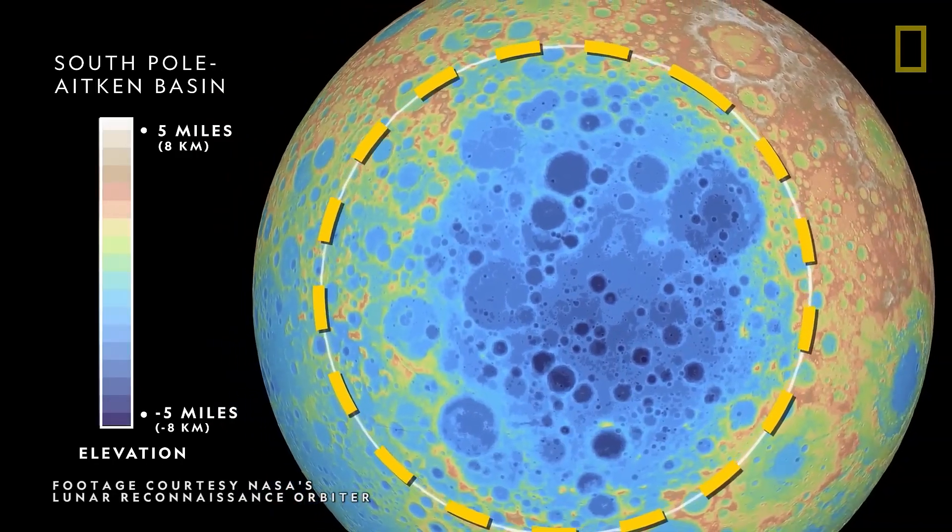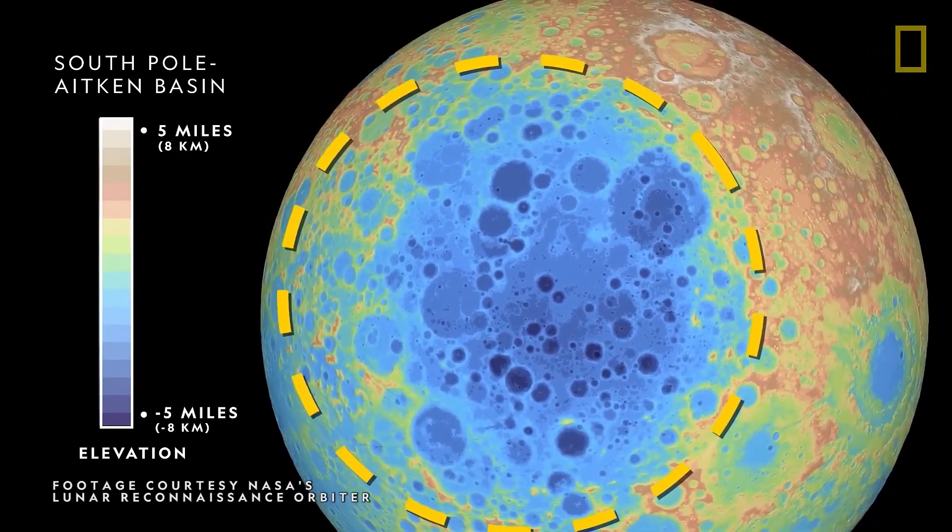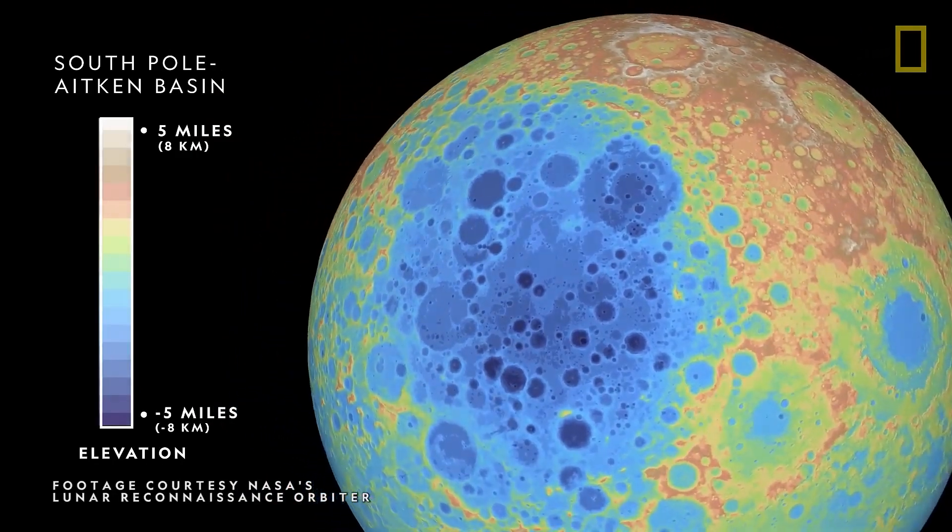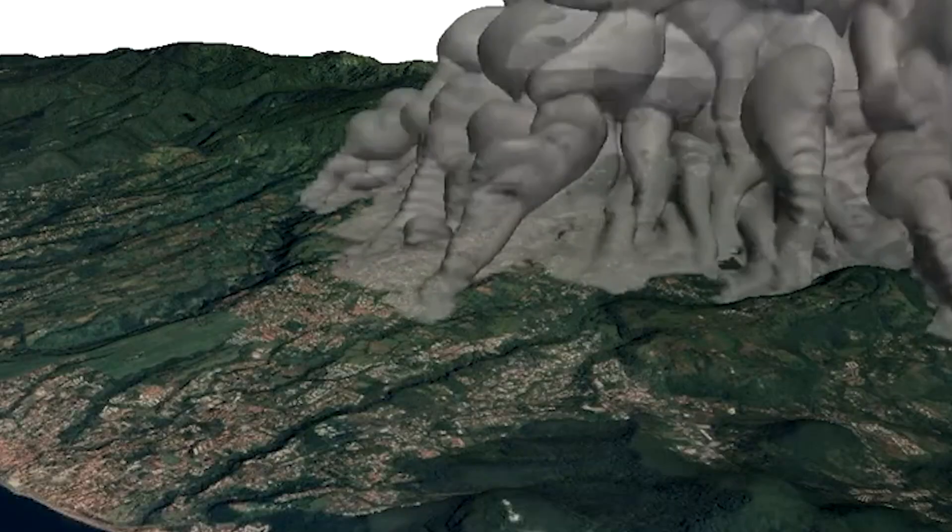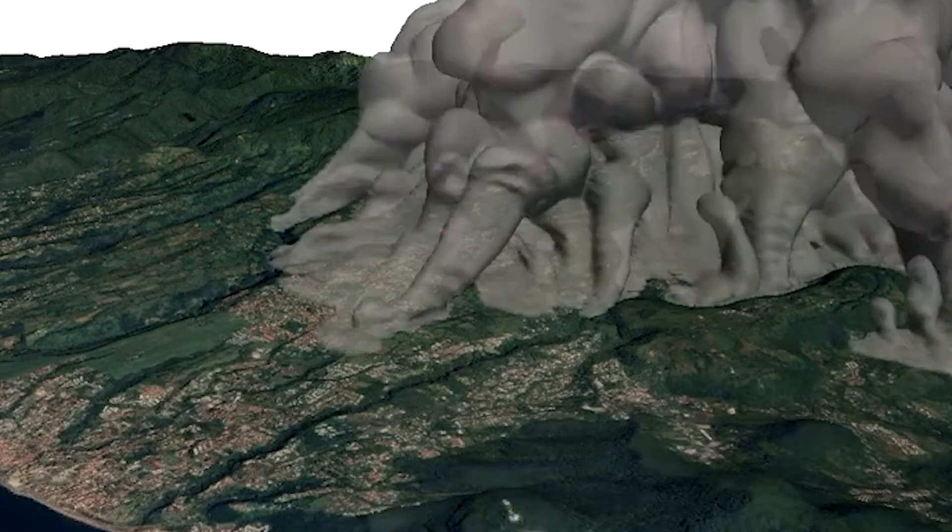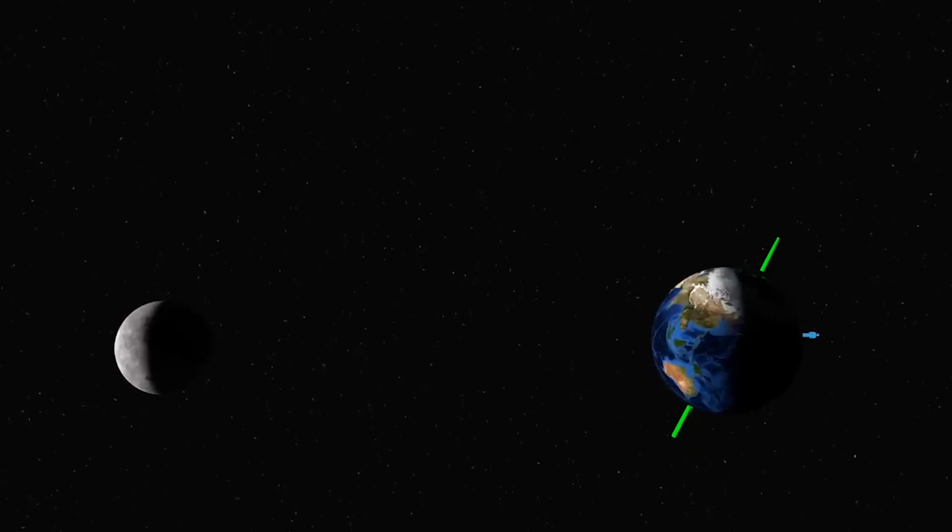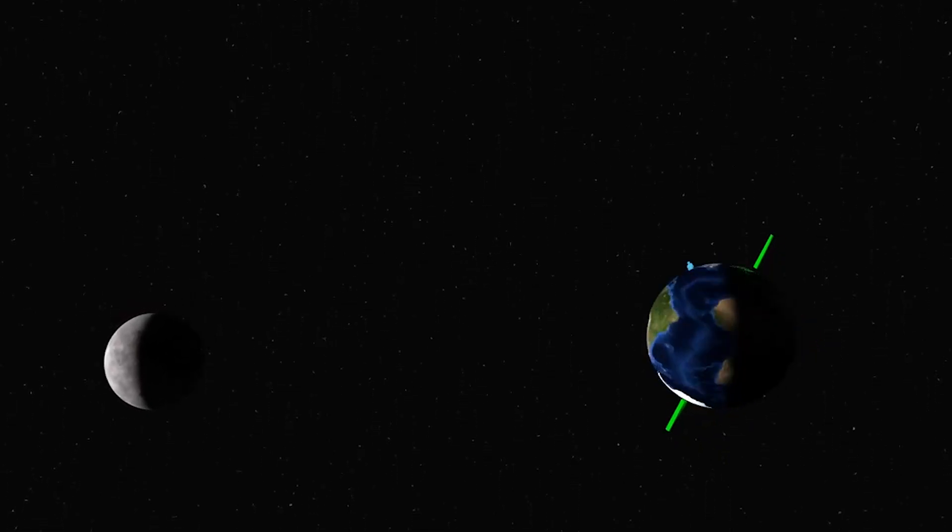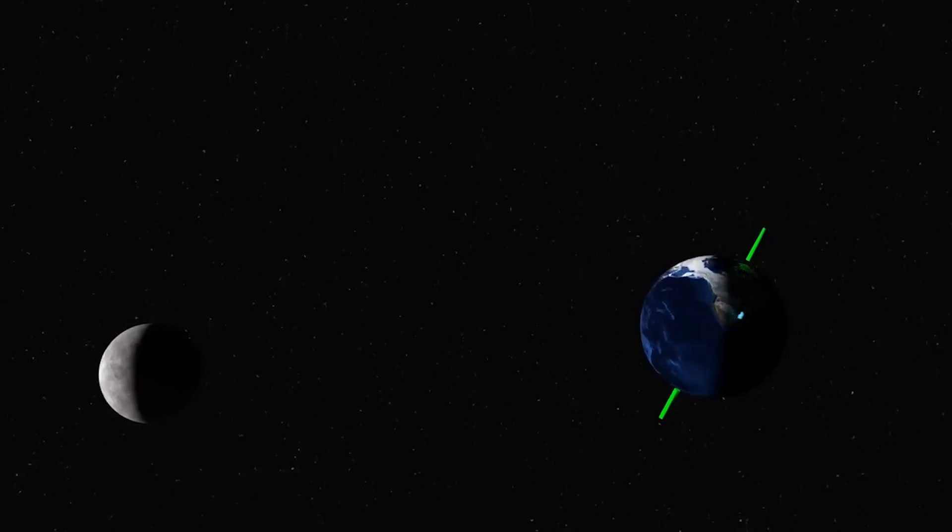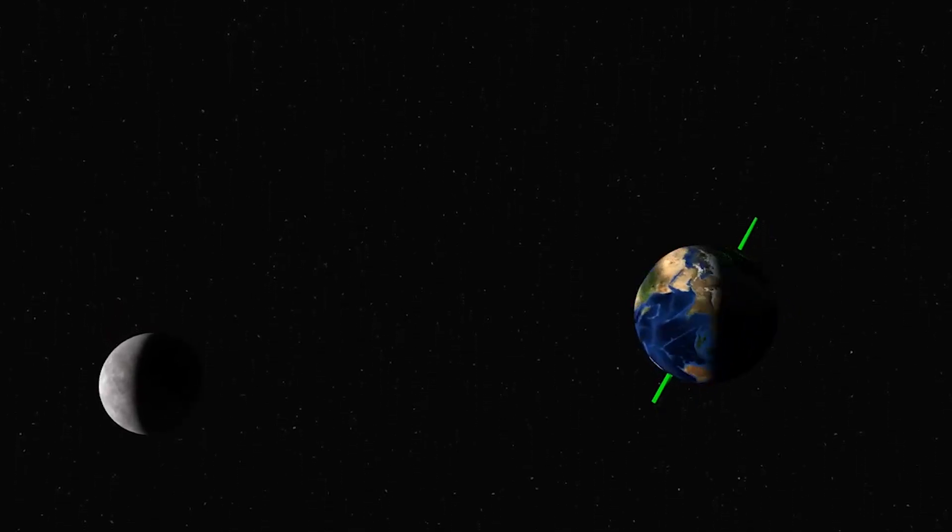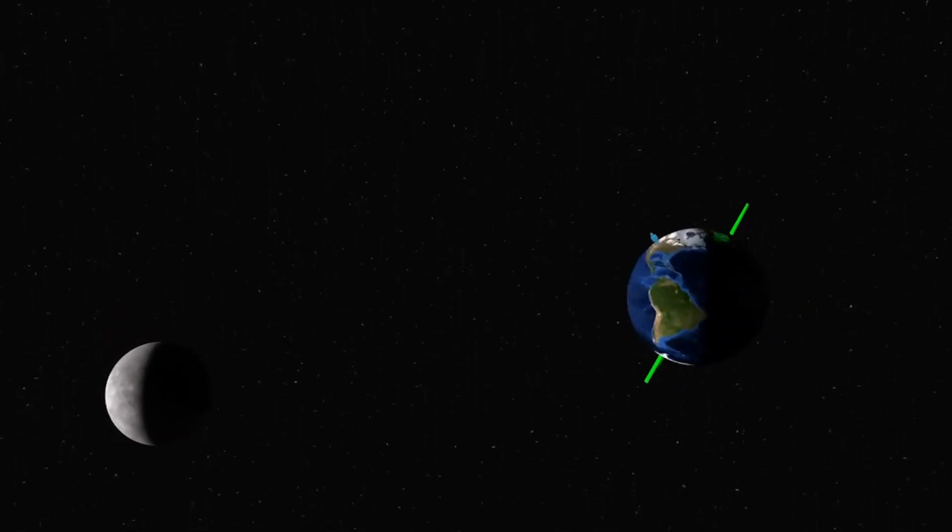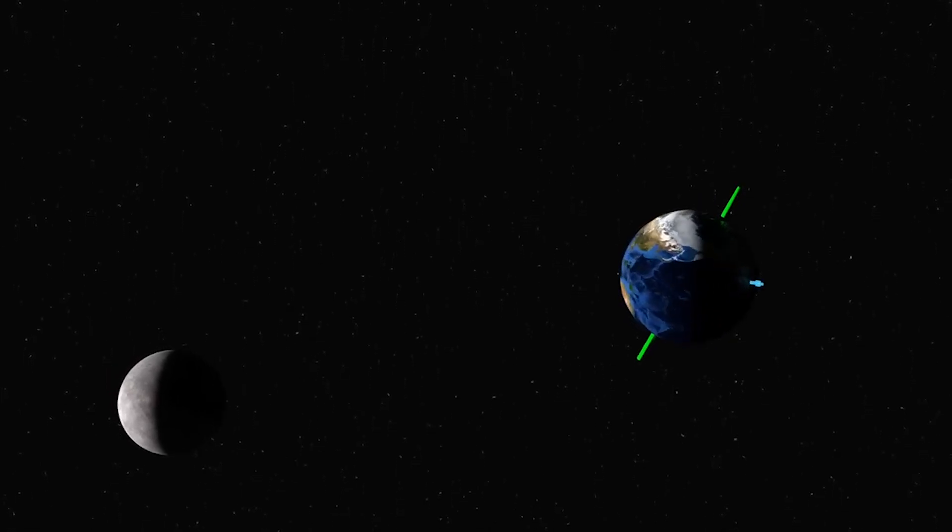The Moon's gravitational pull also has subtle effects on Earth's crust, causing it to bulge slightly. This tidal flexing of the solid Earth contributes to geological processes, including volcanic activity and earthquakes. While the immediate effects of the Moon's retreat on these processes would be minimal, over very long timescales, it could potentially alter the frequency and intensity of certain geological events.